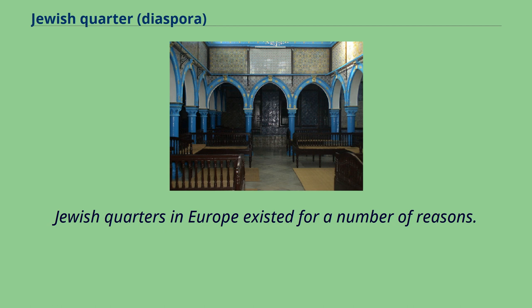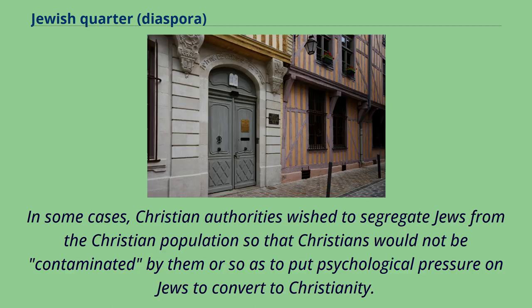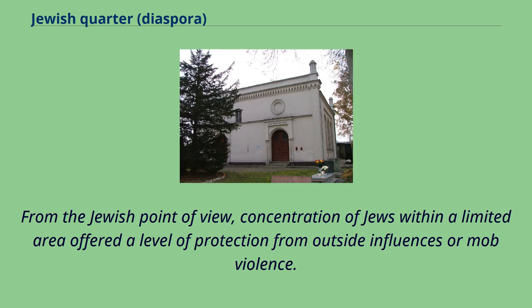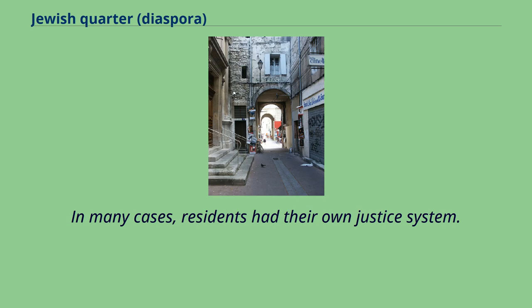Jewish quarters in Europe existed for a number of reasons. In some cases, Christian authorities wished to segregate Jews from the Christian population so that Christians would not be contaminated by them, or so as to put psychological pressure on Jews to convert to Christianity. From the Jewish point of view, concentration of Jews within a limited area offered a level of protection from outside influences or mob violence. In many cases, residents had their own justice system.